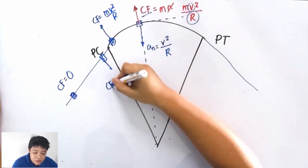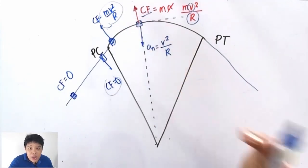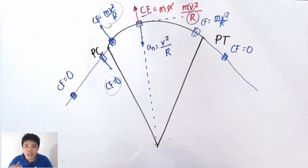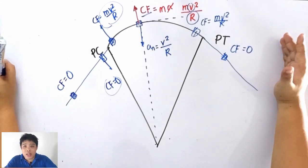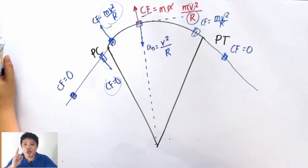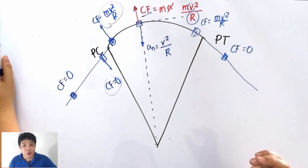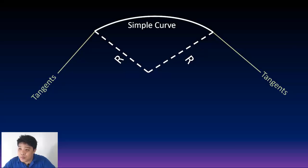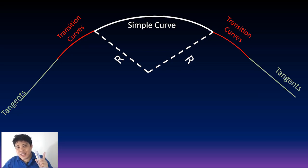There will be a sudden increase of centrifugal force from zero to mv² over r, and the same thing will happen as it leaves the curve. This abrupt, instant change of centrifugal force is bad for the vehicle, its occupants, and the totality of traffic. That's why engineers employ a special curve to provide a transition time for the driver to change from zero centrifugal force to the full value of mv² over r — that is known as the transition curve.